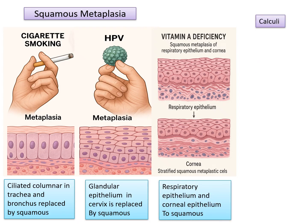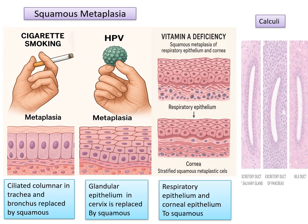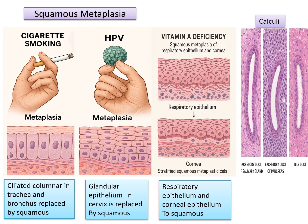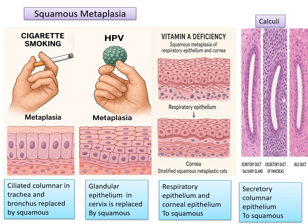In the case of excretory ducts of the salivary glands, pancreas, or bile duct, whenever there is calculi (stone) formation in these ducts, to overcome that stress, the secretory columnar epithelium is replaced by squamous epithelium.